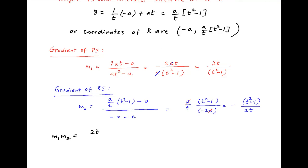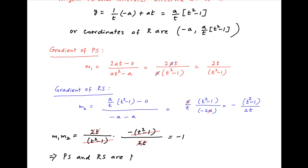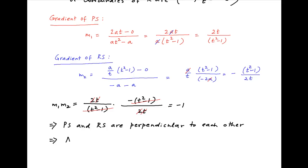The product m1 × m2 = [2t/(t² − 1)] × [−(t² − 1)/(2t)] = −1. Since the product of the gradients of two lines equals −1, the lines PS and RS are perpendicular to each other. Therefore, the angle θ formed between them is π/2, which is the required answer.